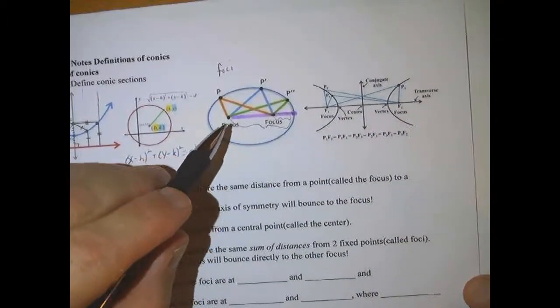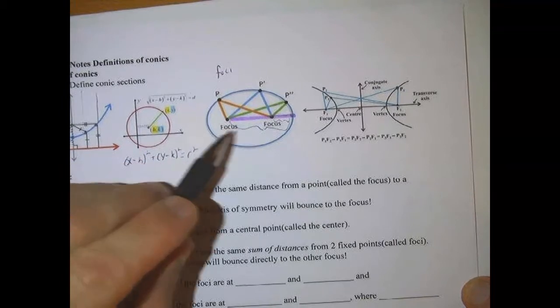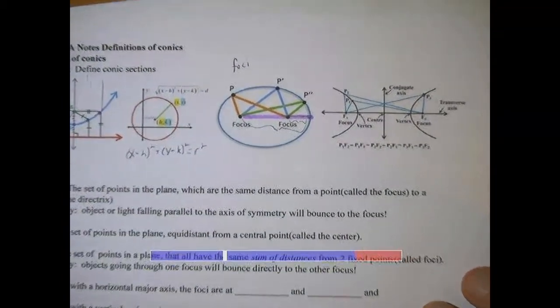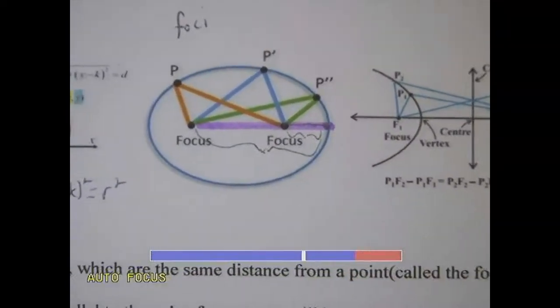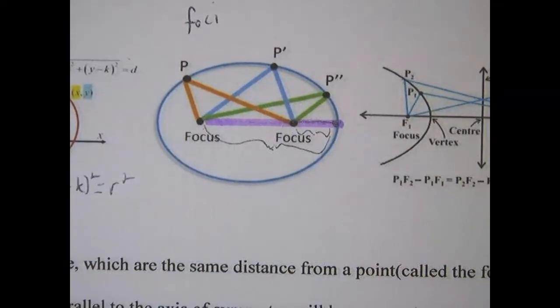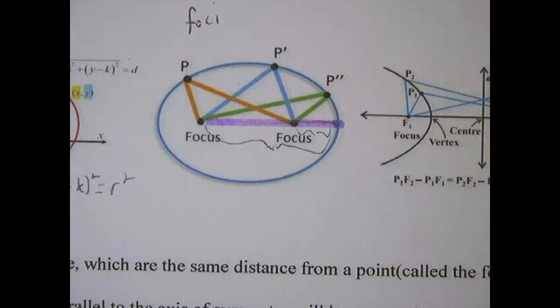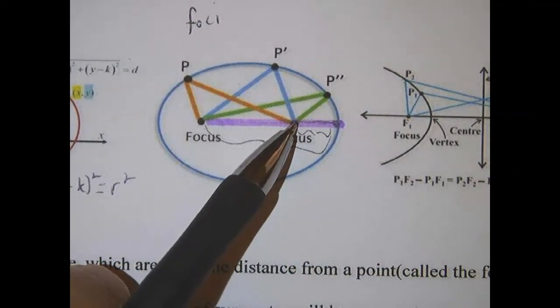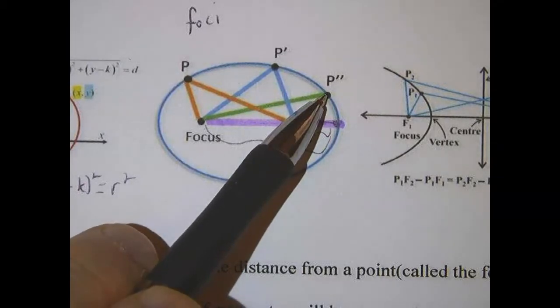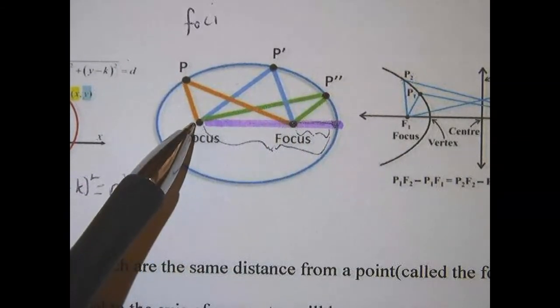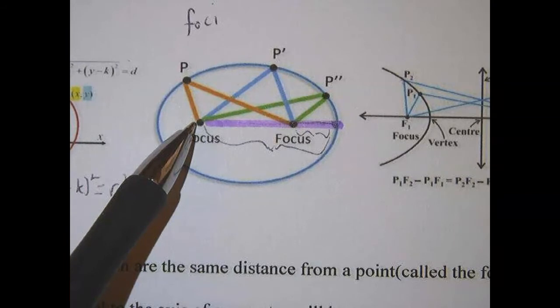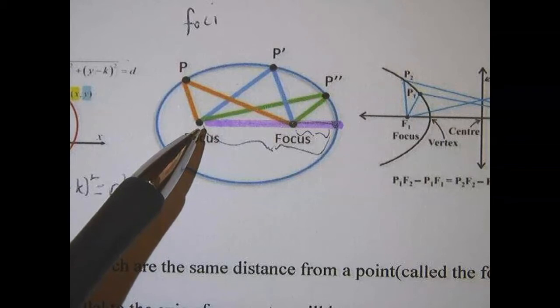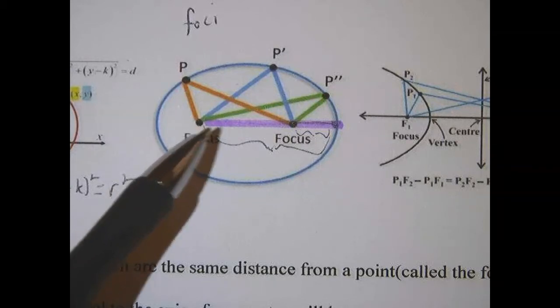So if you imagine being at one, I always like to use the analogy of a hockey rink, because I'm a hockey fan, so if you imagine an elliptical hockey rink with the goalies at the foci, this would not work, and the reason it wouldn't work is because no matter where the goalie hit the puck and bounce it off of the ellipse, it would bounce directly into the other goal.